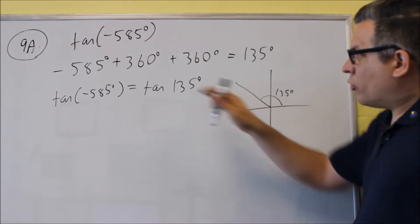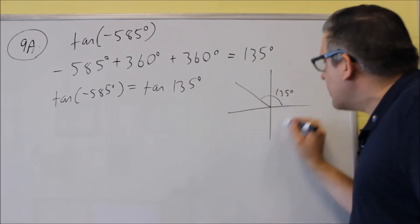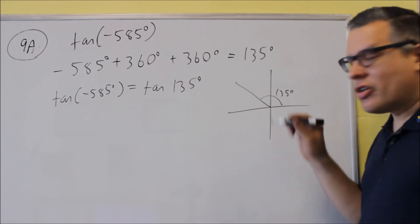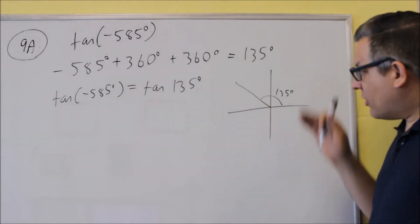Of course, the original angle, negative 585, I'll be going around clockwise, around once, around twice, and around to here. That would be if I have negative 585. I could do it that way too, but instead I want to work with a positive angle. That's that one.